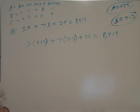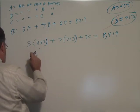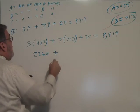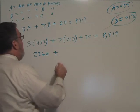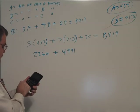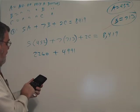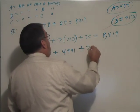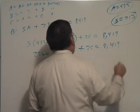All right, I think this was 2,260, wasn't it? 5 times 452 is 2,260 plus probably 4,991. You know, I just want to check that just to make sure. 7 times 713 is 4,991. Okay, plus 2C equals to 8,419.